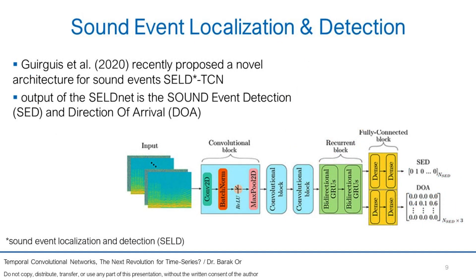Sound event localization and detection (SELD) continues to grow as a field. Understanding the environment plays a critical role in autonomous navigation. Gerges et al. proposed a novel architecture for sound events named SELD-TCN. They claim that their framework outperforms the state-of-the-art in the field with faster training time. In their SELD-NET architecture, a multi-channel audio recording sampled at 44.1 kHz extracts the phase and magnitude of the spectrum by applying a short-time Fourier transformation, and stacks them as separate input features.